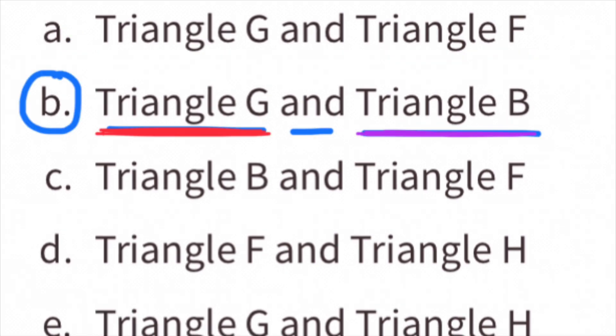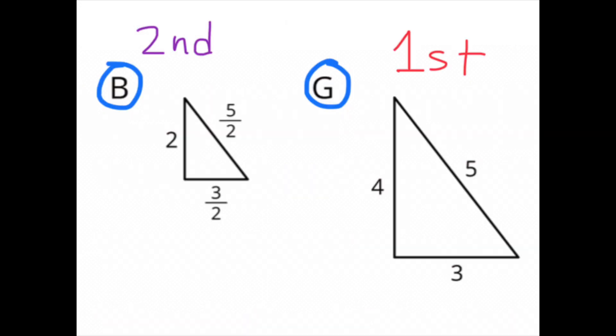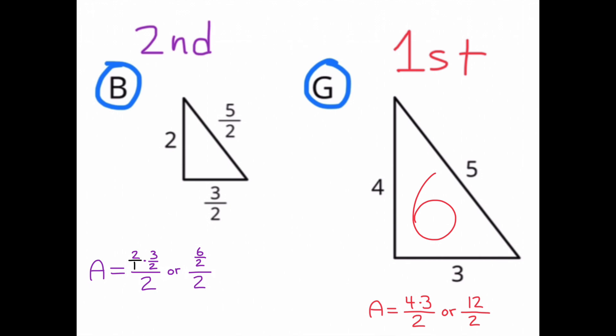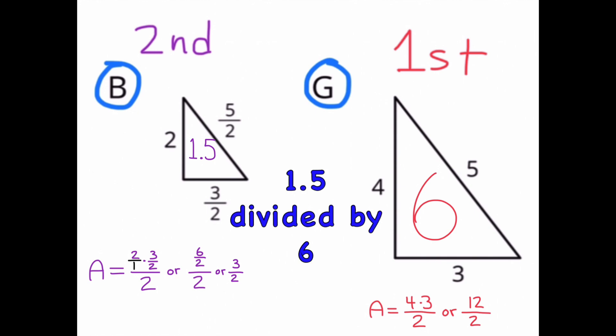Part B: triangle G and triangle B. Triangle G is the first triangle mentioned and triangle B is the second. The area for triangle G is half of 4 times 3, or half of 12, which is 6 square units. The area for triangle B is half of 2 times 3 halves, or 6 halves divided by 2. 6 halves is 3, and 3 divided by 2 is 3 halves, or 1.5. The area for triangle B is 1.5 square units. Triangle B is actually smaller than triangle G. The area of triangle B divided by the area of triangle G is 1.5 divided by 6, which equals 1 fourth.